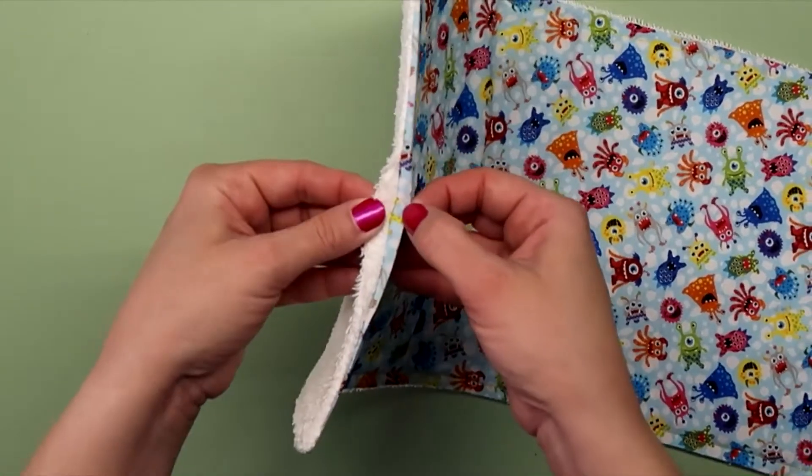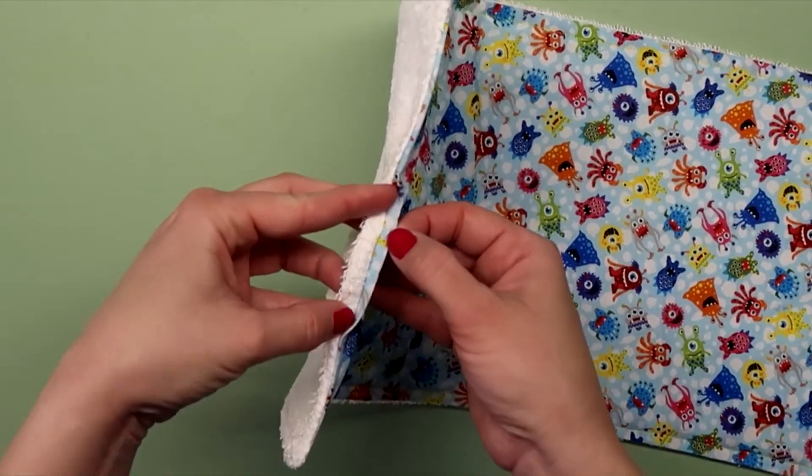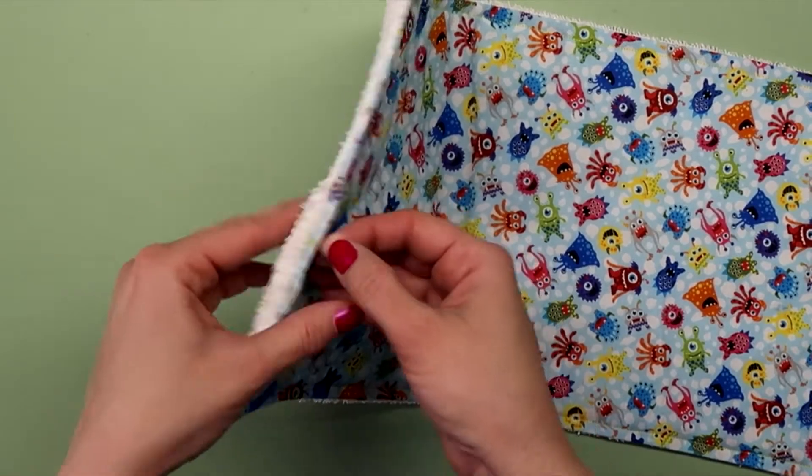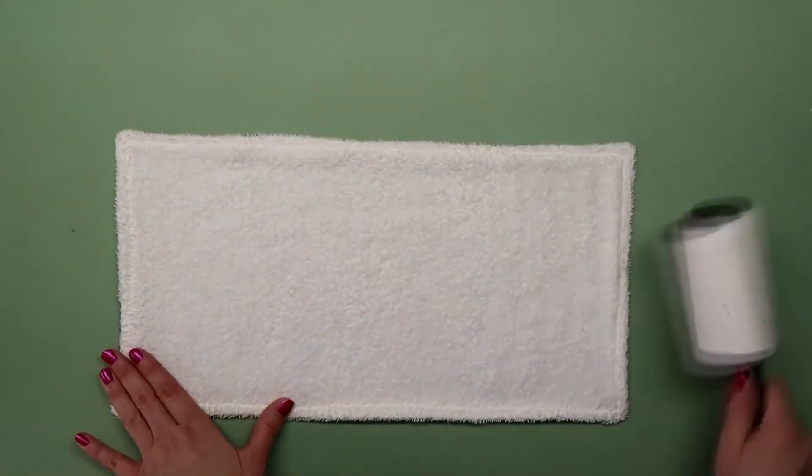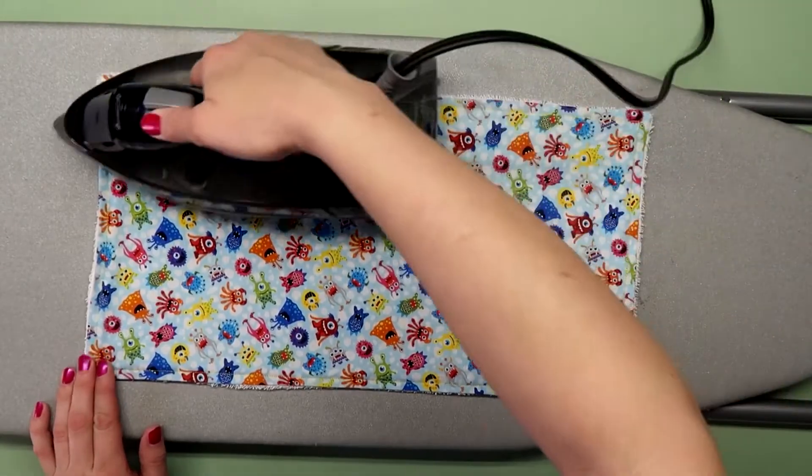You can see the topstitching added a decorative touch as well as closed up that gap nicely. I like to lint roller mine to get some fuzzies off and give it another press with the iron.